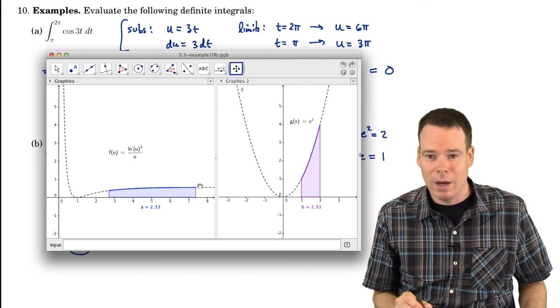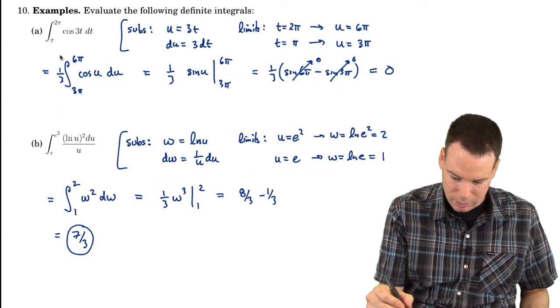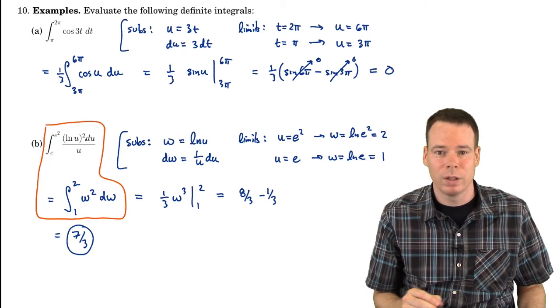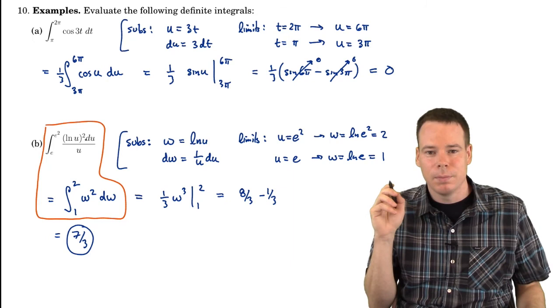But notice, we knew these two areas were equal before we even knew the value. Let's look back here. We had that this integral was equal to that integral. Before we even worked out the value of either of those two integrals, we knew that these two integrals were equal. So we know those two regions had the same area. We didn't know what the area was yet.